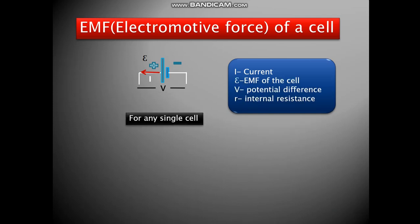R is the internal resistance of the cell, which is not visible. For any single cell, we have the EMF of the cell is equal to V plus I into R. So if we rearrange it, then we have V is equal to E minus IR.